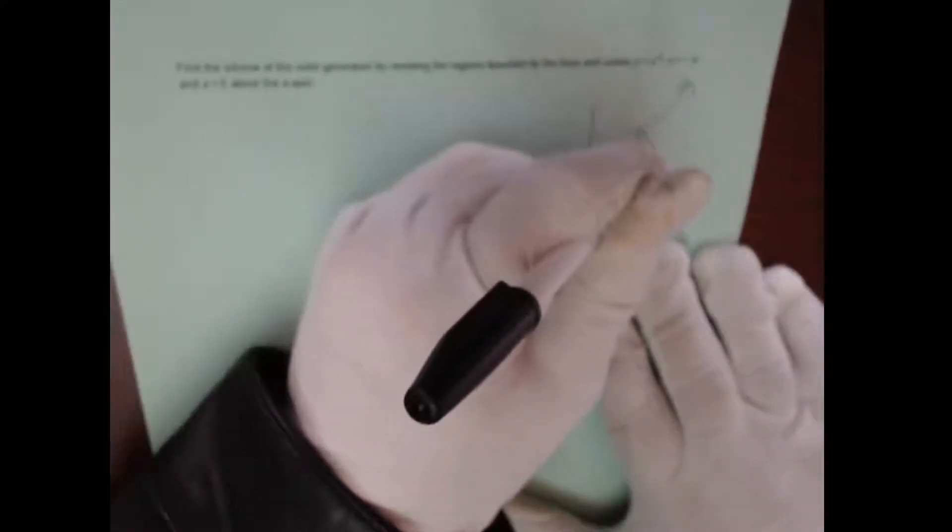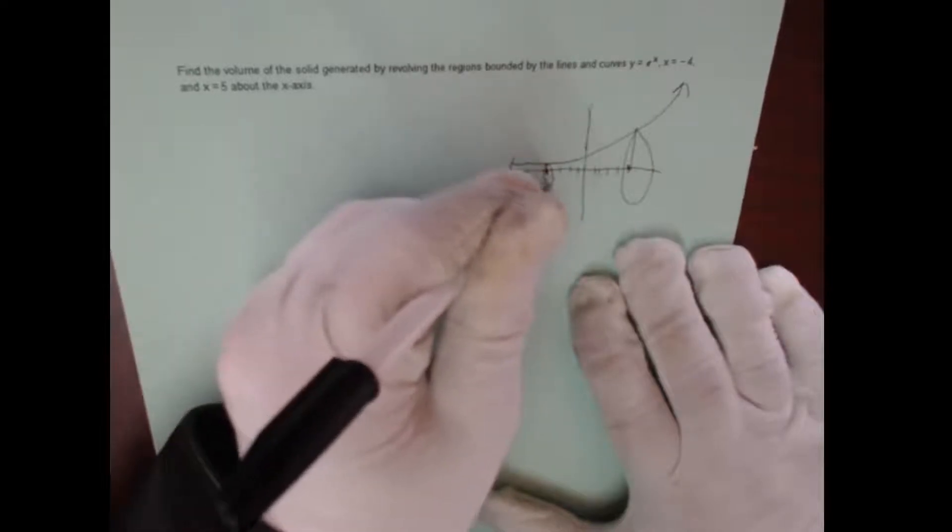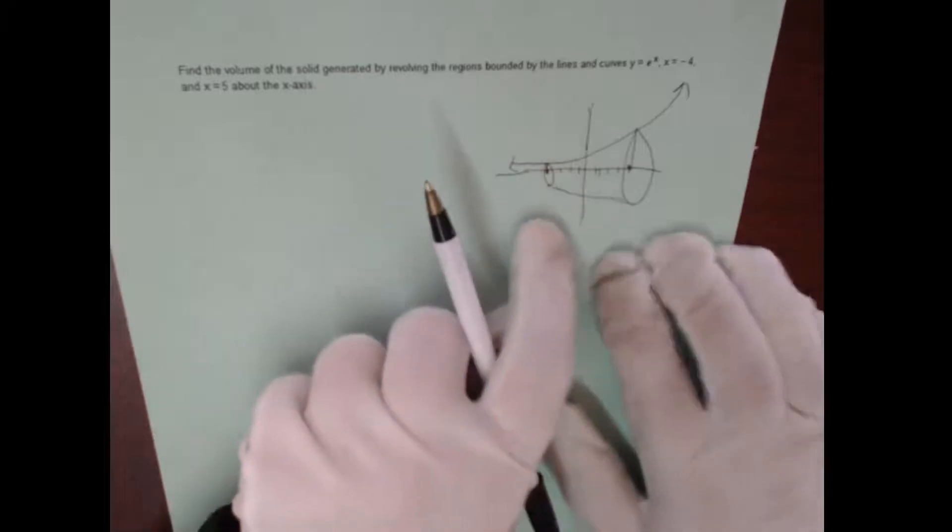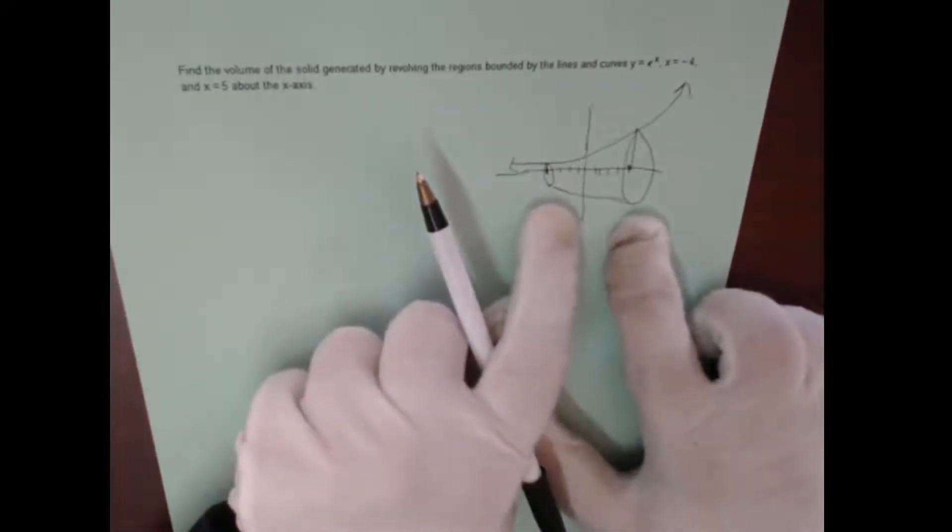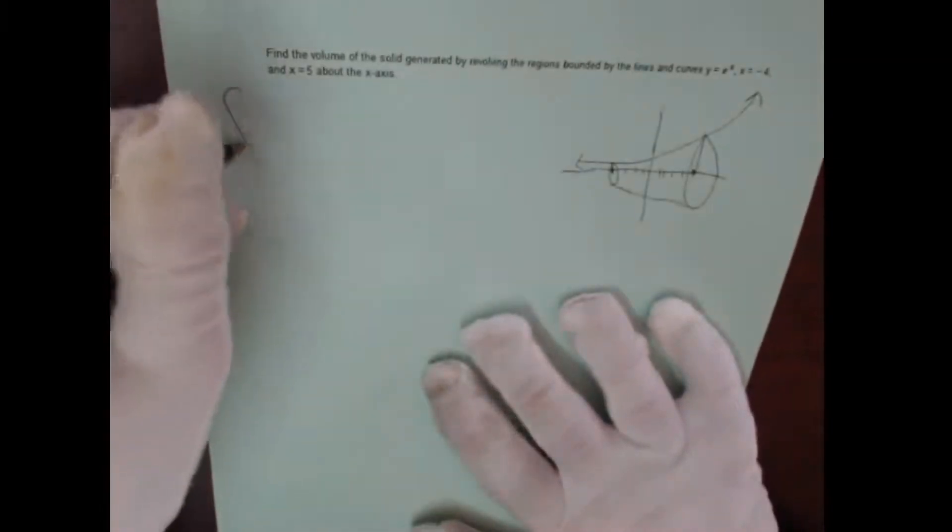And we're going to rotate it which will create kind of this funnel-looking shape. And we're going to use the formula to find the volume of that funnel thing created by the e curve. And fortunately it's pretty straightforward. So let's just do it. Remember that the formula is the integral from a to b of pi r squared, basically where r is our function.